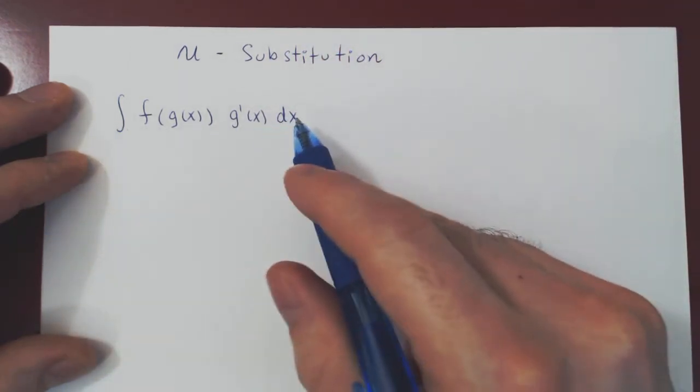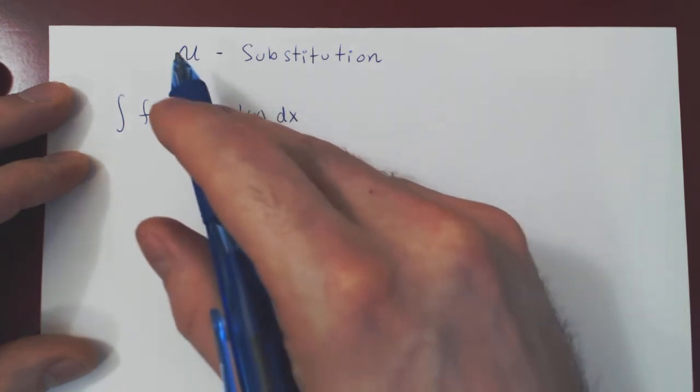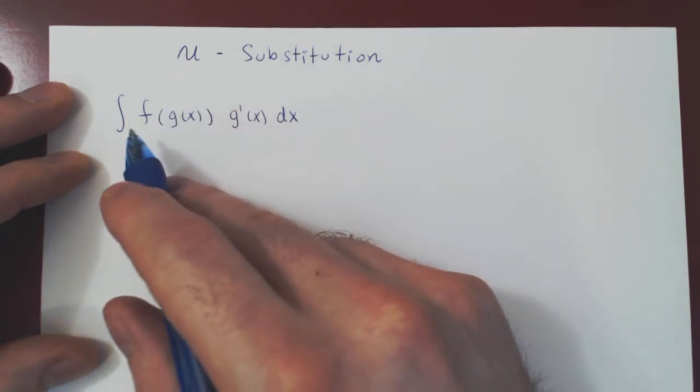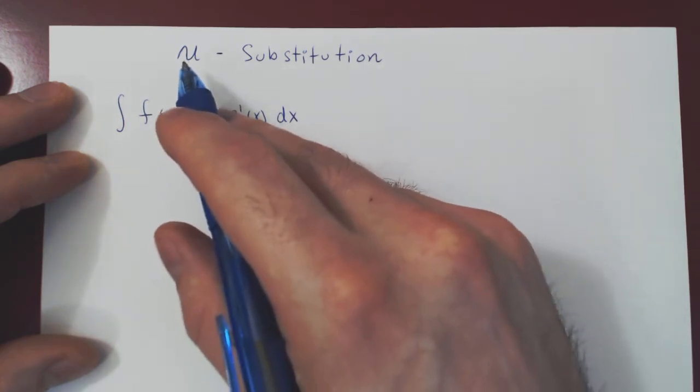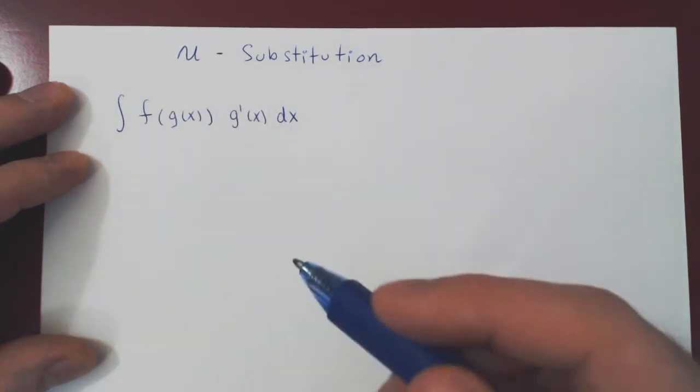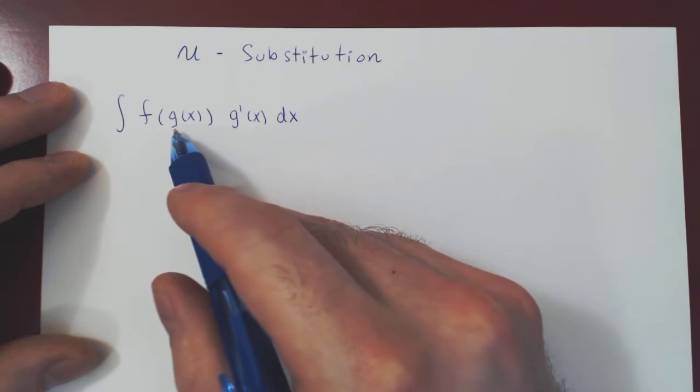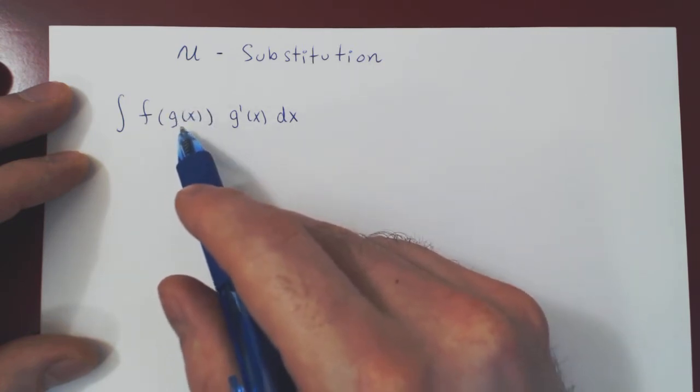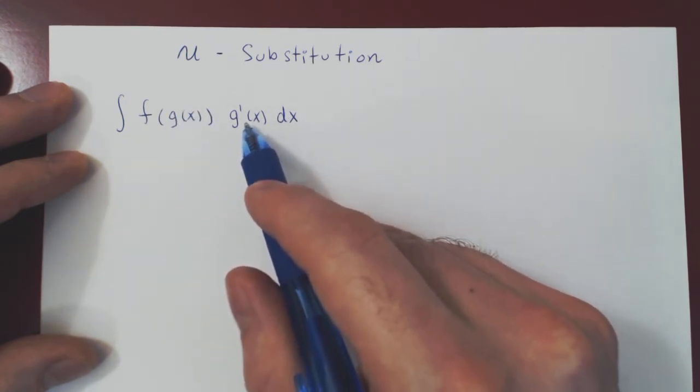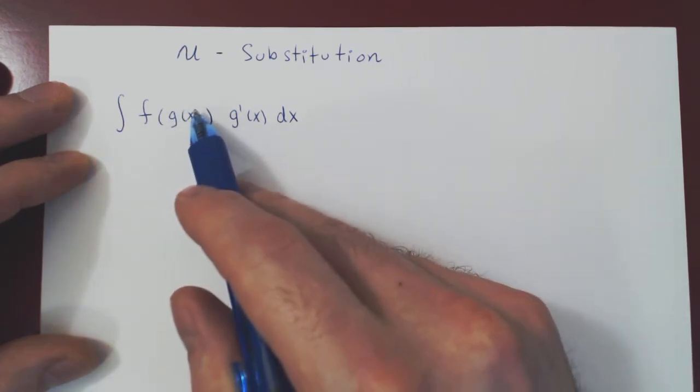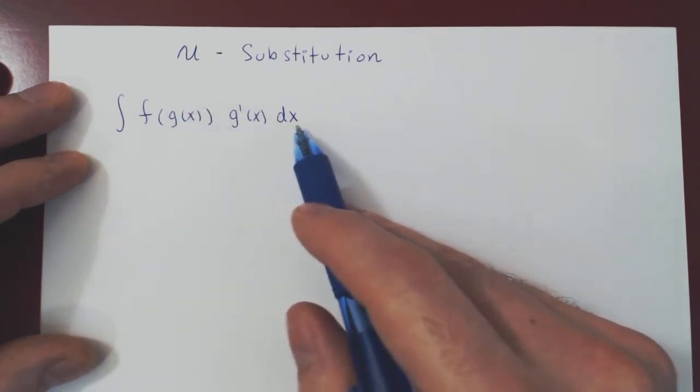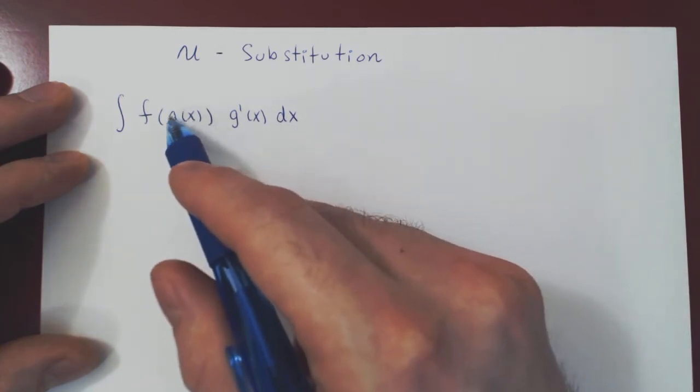This is the generic setup, and the idea when you make a substitution, so you want to transform the old variable x in terms of the new variable u, usually the rule of thumb is you're looking for a function, here g of x, whose derivative g prime of x is multiplying the expression. So if you find a function g of x, whose derivative multiplies the expression, this will become your u.